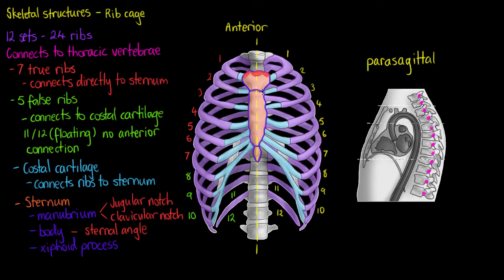The sternal angle is the joint point between these two segments of our sternum. It is sometimes referred to as the manubrio sternal joint and forms a symphysis, which is a type of cartilaginous joint.